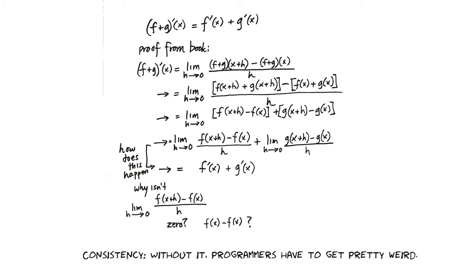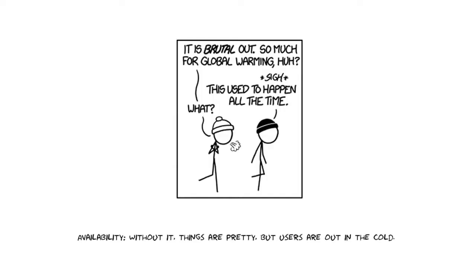Consistency — without it, programmers have to get pretty weird. You start to build a system. The programmer has different needs than the user does. When the programmer is building something, they can handle really horrible error messages that make sense to them. They can handle connection timeouts. But without availability, the users get left out in the cold. So even though a developer is willing to accept these things, your end user really isn't.